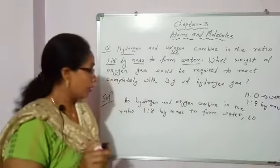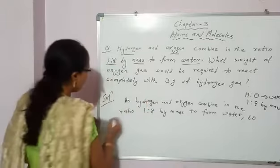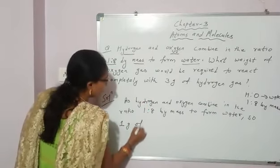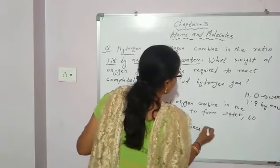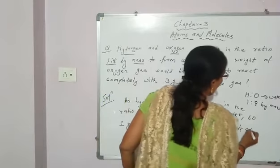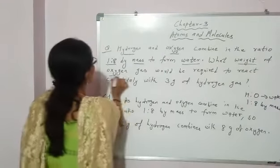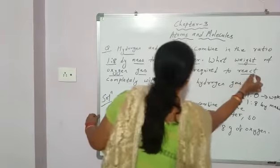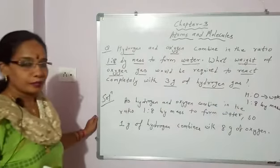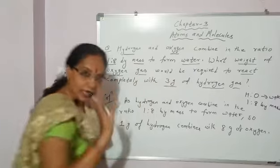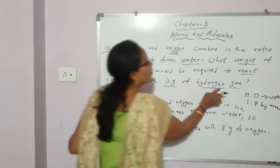What does this say? It means 1 gram of hydrogen combines with 8 gram of oxygen. So, what weight of oxygen gas would be required to react completely with 3 gram of hydrogen gas?